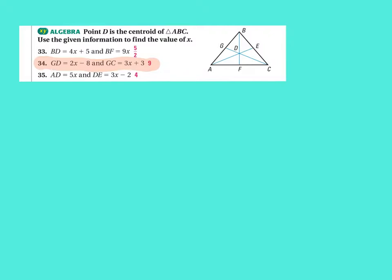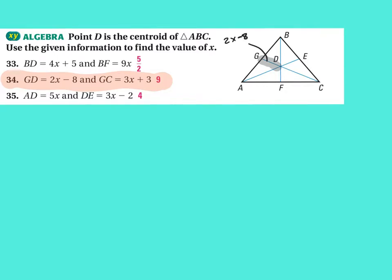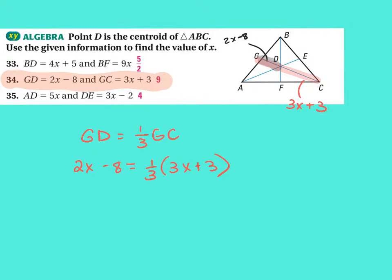Problem 34 said: D is the centroid of triangle ABC; use the given information to find the value of X. So if GD — which is this segment — is 2X minus 8, and GC — this whole thing — is 3X plus 9, then the relationship between them is that GD would be one-third the whole GC. So 2X minus 8 equals one-third of 3X plus 9. You could multiply both sides by 3, or distribute the one-third: 2X minus 8 equals X plus 1.